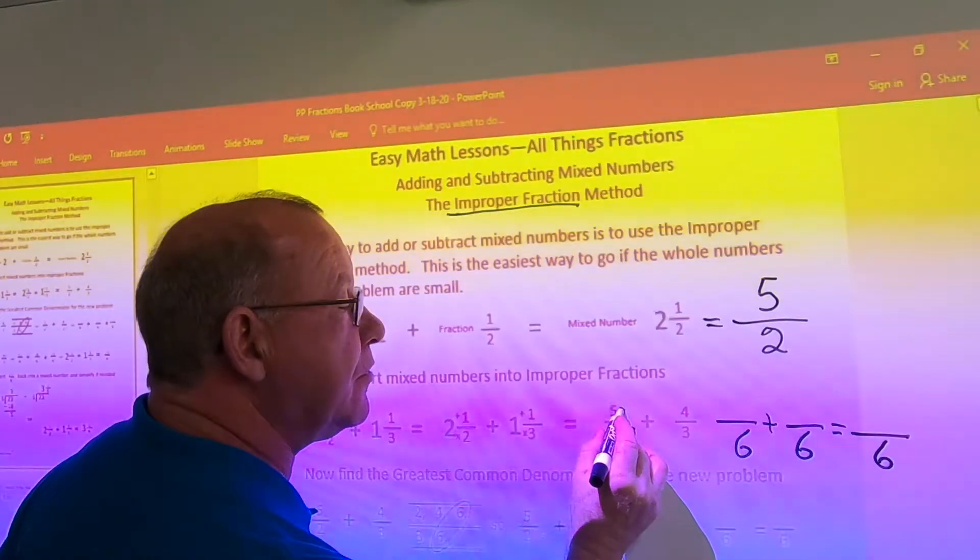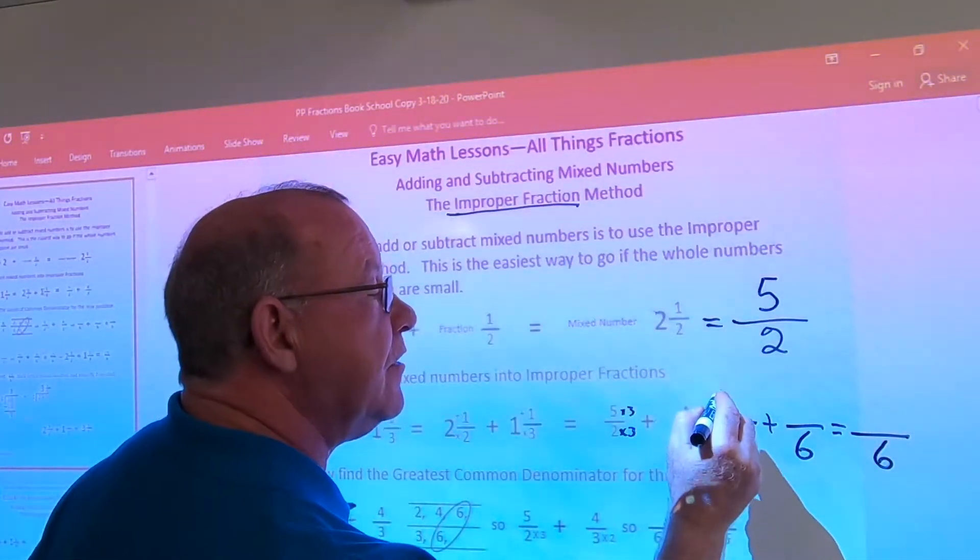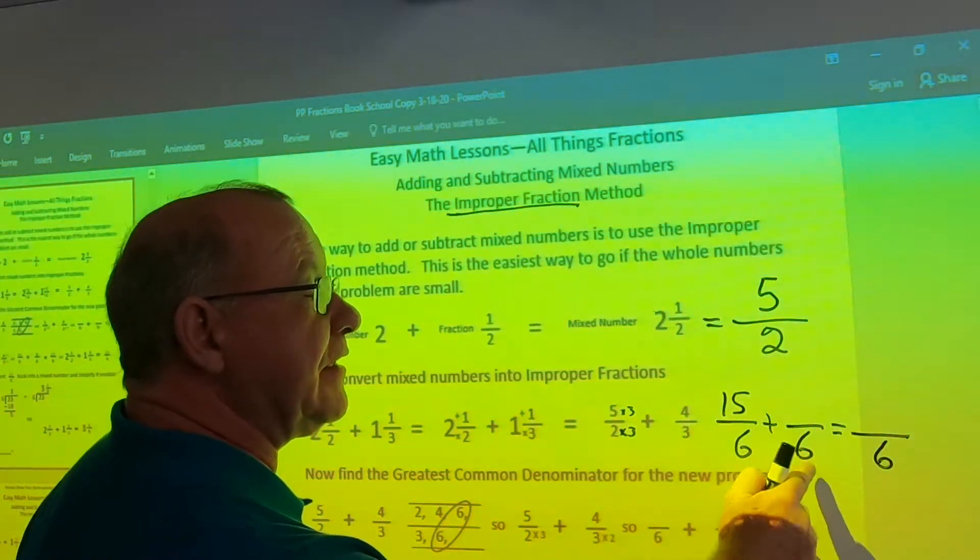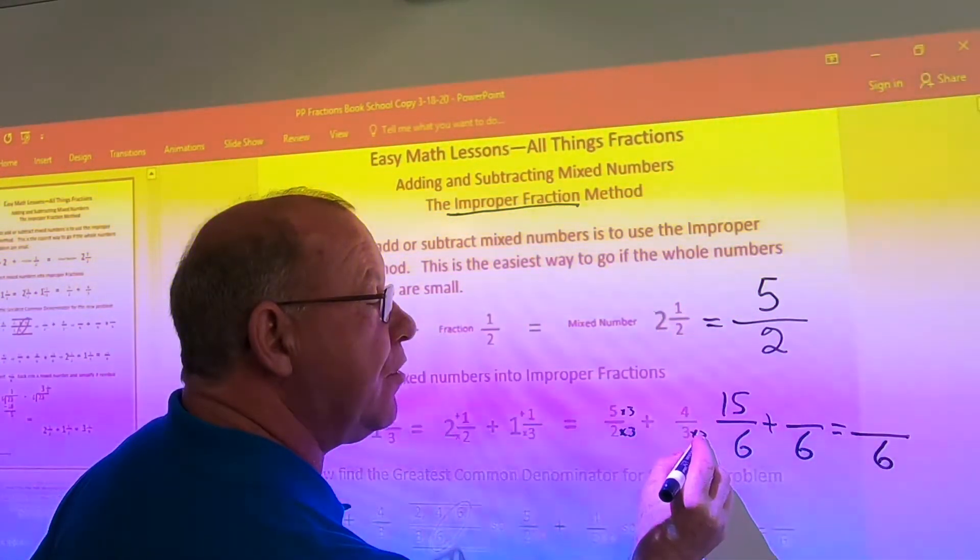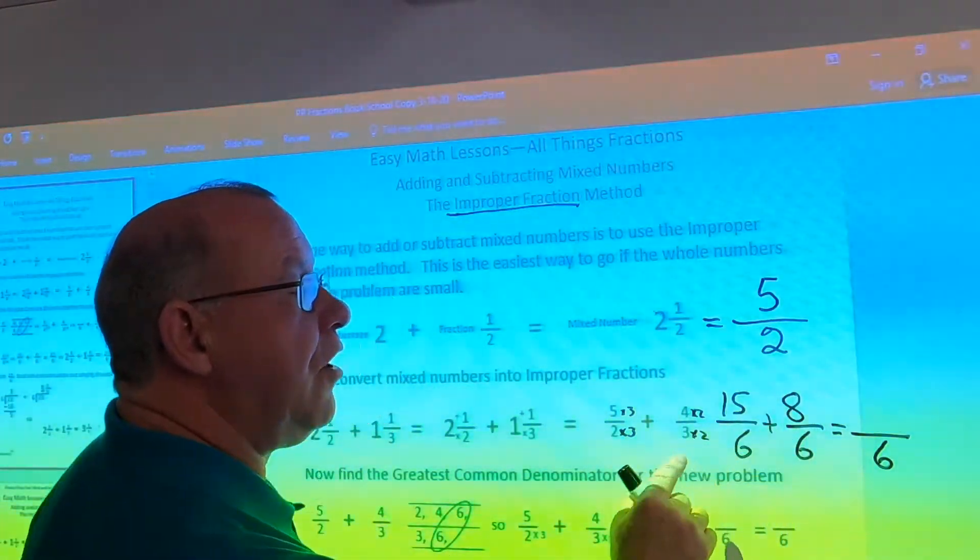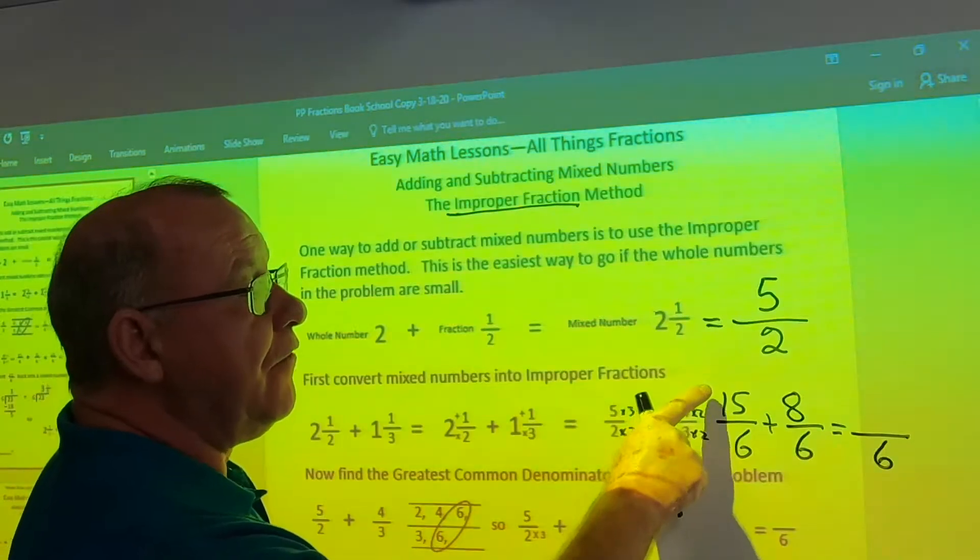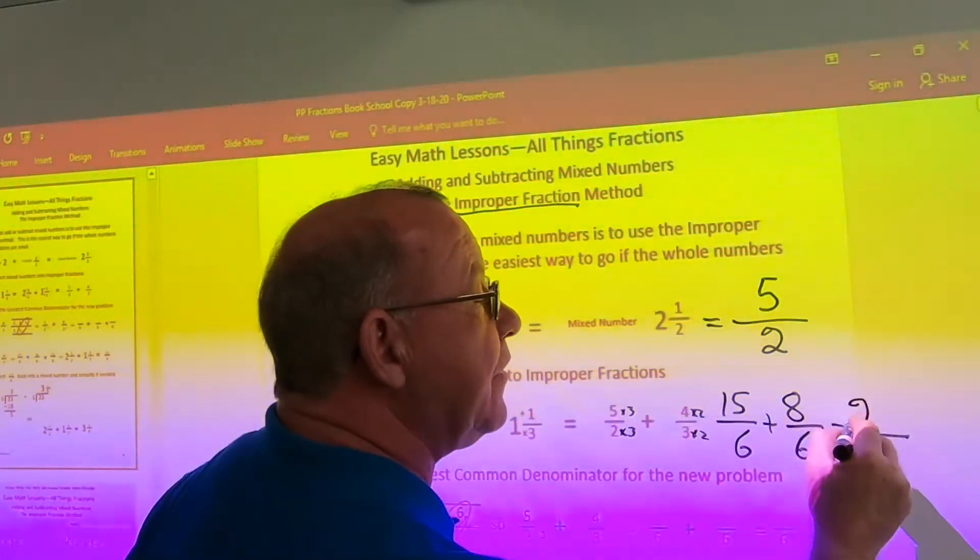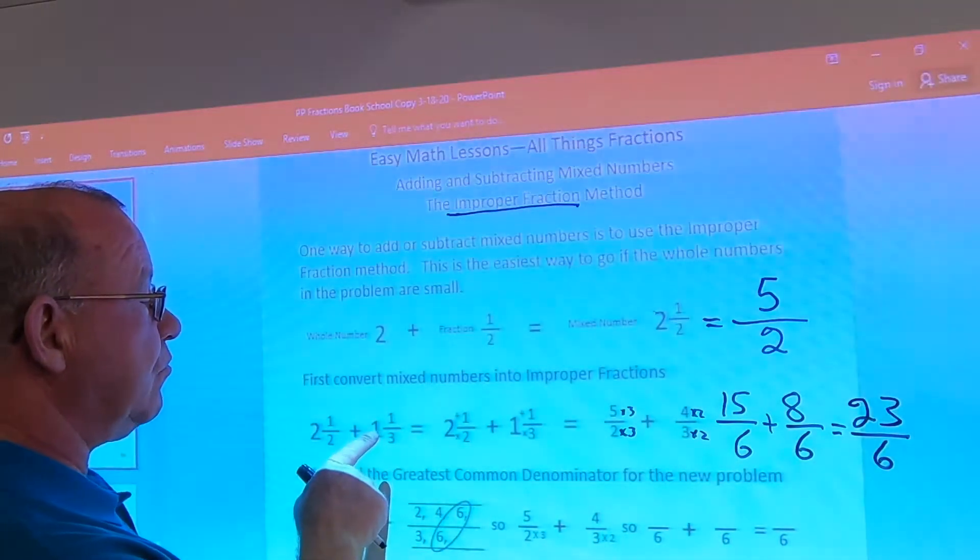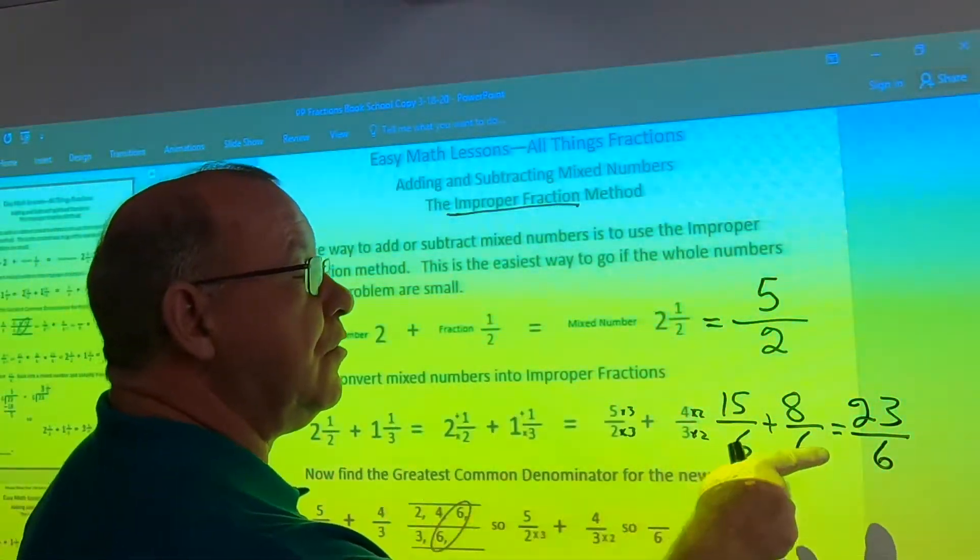If I do it on the bottom, I've got to do it on top. Five times three is 15. The three I'd have to multiply it to get this six, so I'd have to multiply it by two. If I do it on bottom, you've got to do it on top times two. Four times two is eight. So, all I have to do now is add the top. Fifteen plus eight is 23. Two and a half plus one and a third is going to equal 23 sixths.